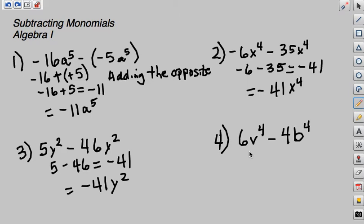Number four: 6v to the fourth minus 4b to the fourth. We first have to look and see, are these like terms? If you notice, they are not like terms because we have a different variable. So we really can't simplify it any further than what it is. It's just going to be 6v to the fourth minus 4b to the fourth.